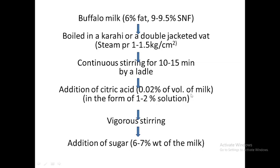For one kg of milk, we add 0.2 gram of citric acid. This 0.2 gram is to be transformed into a one percent solution. To do this, we take 100 times the water — so 0.2 gram citric acid requires 20 grams of water. We mix 0.2 gram citric acid with 20 ml of water (ml and gram are the same for water since its density is one), and then this solution is added to the milk — citric acid is not added directly.